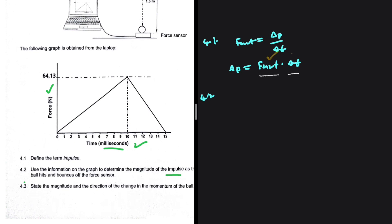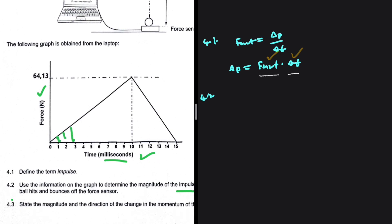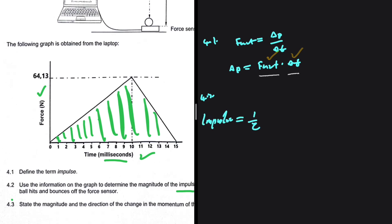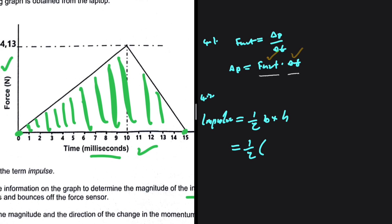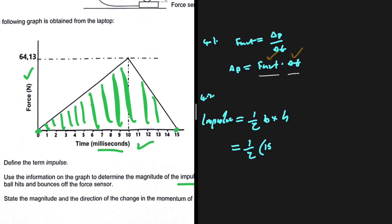The impulse is the force multiplied by the time. We have a triangle shape, so in order to find the impulse, we need to find the area of this triangle. The area of a triangle is half base multiplied by height. Our base is the time in milliseconds - we go from 0 to 15 milliseconds, so we have 15 divided by 1000 to convert to seconds. Multiply by our height, which is given as 64.13. If you put that in your calculator, you'll get 0.481 Newton-seconds.